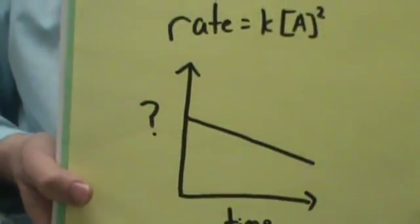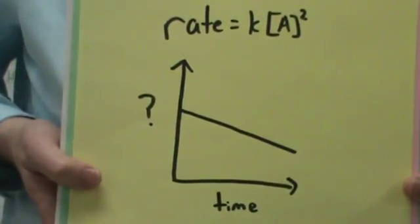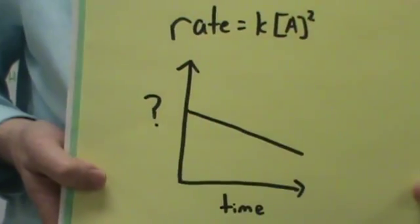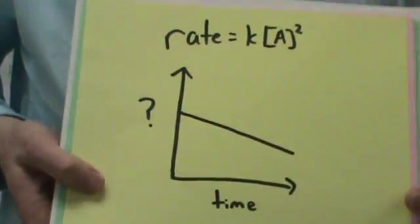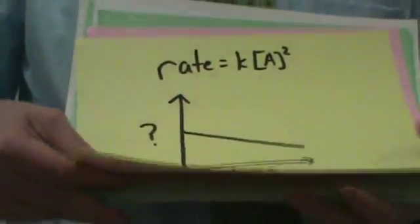What's missing from the axis? For second order, you would need one over concentration versus time to get a straight line. Sorry, that line should go up.